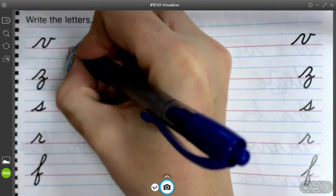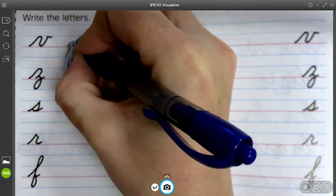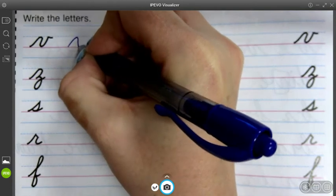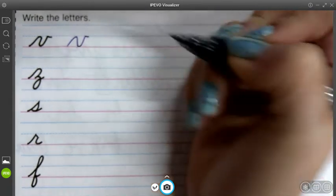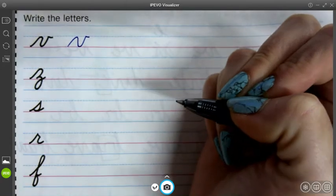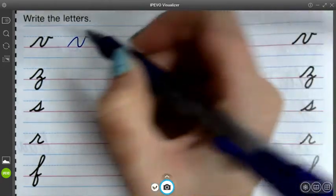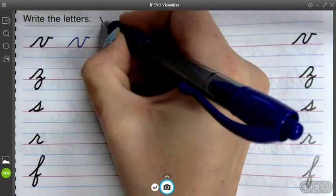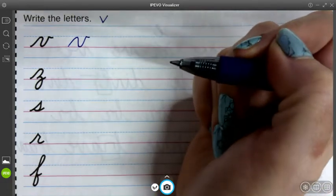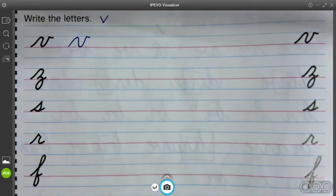Our V starts at the bottom red line. We go up and over, and we end in a side stroke. Remember, it's important that our cursive V does not have that point on the bottom like a print V. We need it to look like a cursive V.